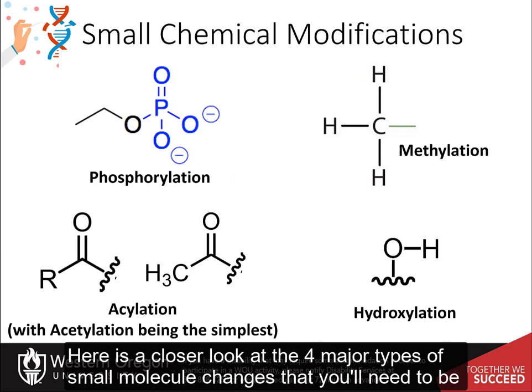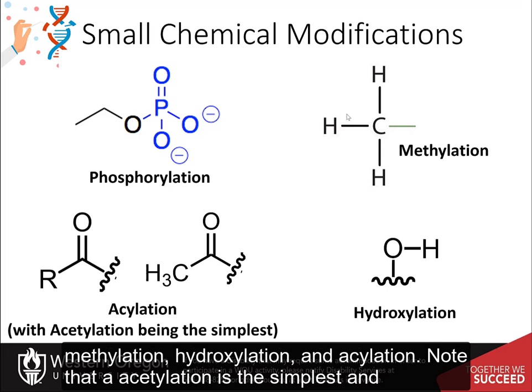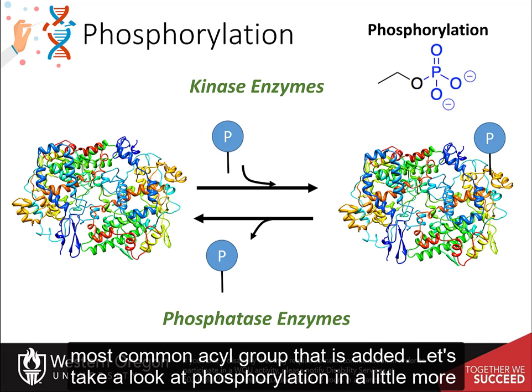Here is a closer look at the four major types of small molecule changes you will need to be familiar with: phosphorylation, which is most commonly studied, followed by methylation, hydroxylation, and acylation. Note that acetylation is the simplest and most common acyl group that is added. Let's take a look at phosphorylation in a little more detail.